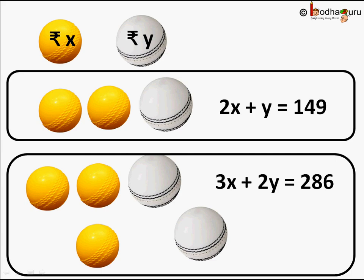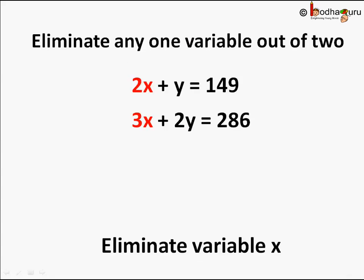We can solve the equations only if we somehow eliminate one variable. We can actually eliminate one variable directly rather than substitution. For that we have to make the coefficient of one variable same in both the equations. Then we can subtract the equations, right?